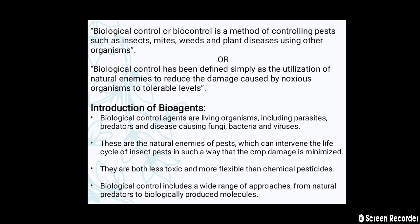Next is the introduction of bioagents. Biological control agents are living organisms including parasites, predators, and disease-causing fungi as well as bacteria and viruses. These are the natural enemies of pests which can intervene in the life cycle of insect pests in such a way that crop damage is minimized. They are both less toxic and more flexible than chemical pesticides. Biological control includes a wide range of approaches from natural predators to biological produce molecules.